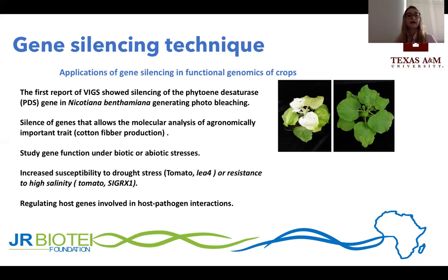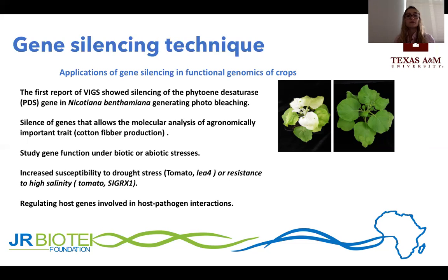VIGS also allows the molecular analysis of agronomically important traits — for example, in cotton fiber production, we can study the importance of genes involved in producing fiber. VIGS also allows the study of gene function under biotic or abiotic stresses, such as drought and salinity stress, which can be induced during your experiment. Additionally, gene silencing allows the study of host genes involved in host-pathogen interactions by silencing the host gene, inducing a pathogen infection, and observing how the gene is involved in that interaction.